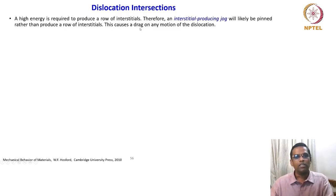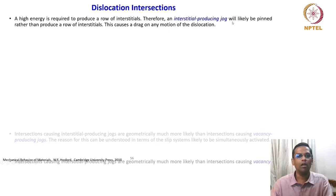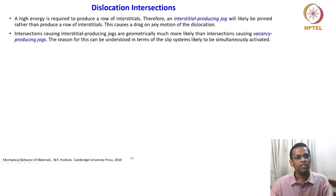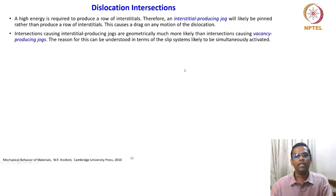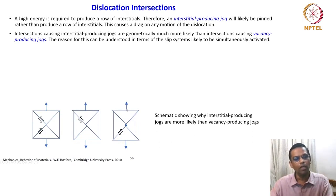This causes a drag on any motion of the dislocation, as we have seen. We are now talking about two types of jog: interstitial-producing jog or vacancy-producing jog. Intersections causing interstitial-producing jogs are geometrically much more likely than intersections causing vacancy-producing jogs. The reason for this can be understood in terms of the slip systems likely to be simultaneously activated. A schematic is shown here to explain whether an interstitial-producing or vacancy-producing jog will be generated.